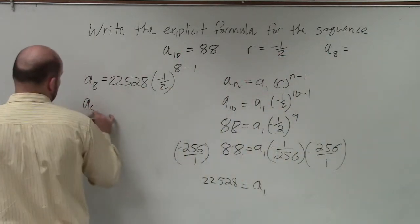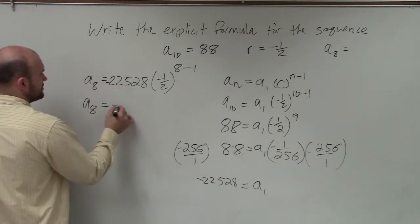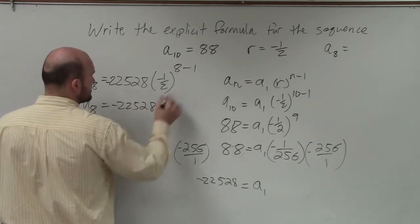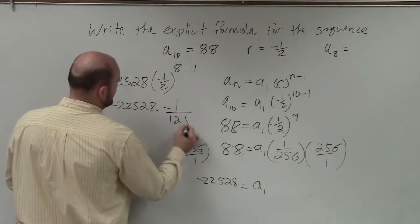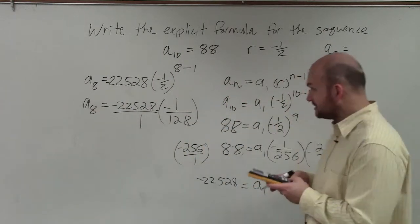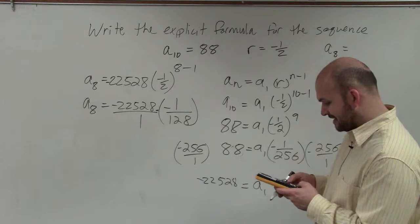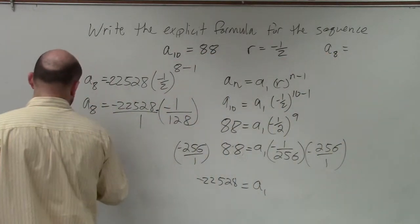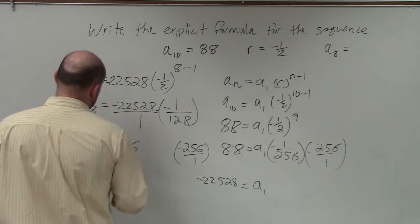So I have a_sub_8 equals — is that a negative? Yeah, it's a negative, right? So negative 22,528 times this becomes a negative 128. So now when I multiply them, I'm basically taking negative 22,528 and dividing it by 128, which means a_sub_8 is going to equal negative 176.